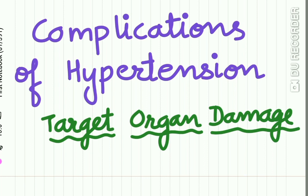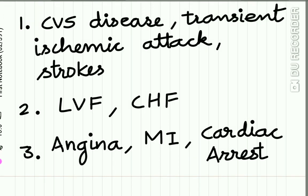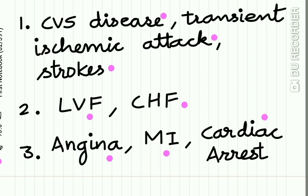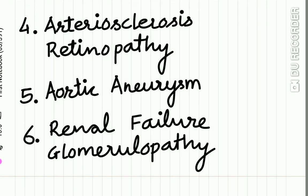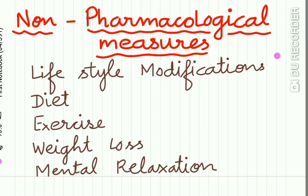What are the complications of hypertension? Hypertension causes target organ damage. Various complications of hypertension include cardiovascular diseases, transient ischemic attack, strokes, left ventricular failure, congestive heart failure, angina, myocardial infarction, and cardiac arrest.